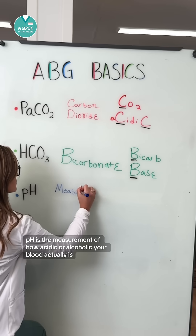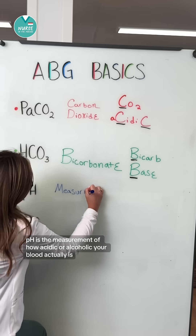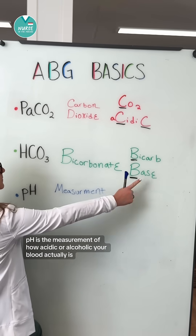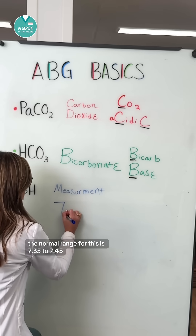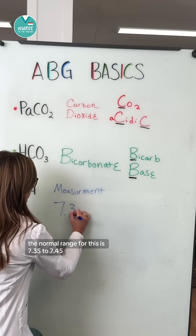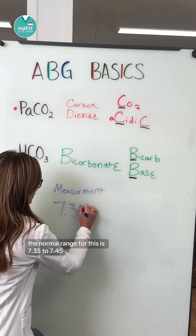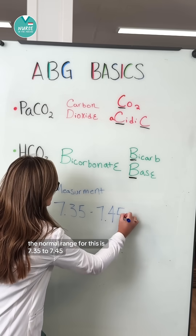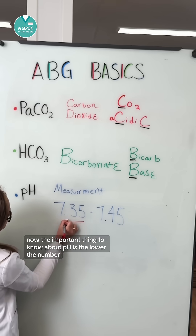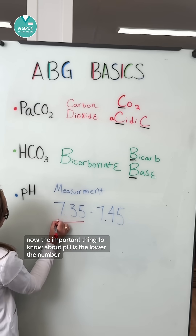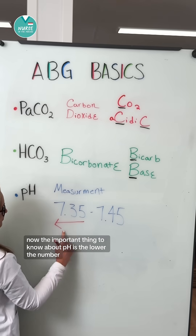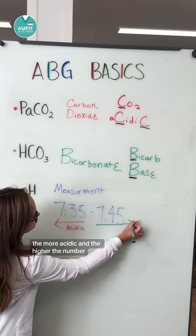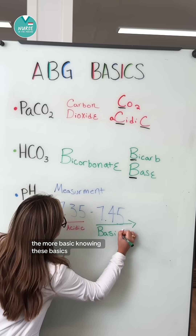Now pH is the measurement of how acidic or alkalotic your blood actually is. The normal range for this is 7.35 to 7.45. The important thing to know about pH is the lower the number, the more acidic, and the higher the number, the more basic.